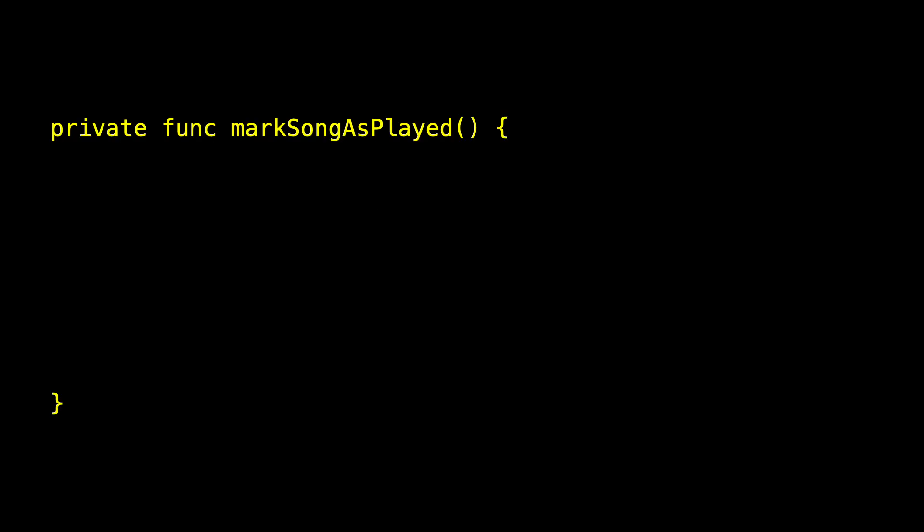Often when we're developing an app we want to track the status and see where things are. And although we know we should use breakpoints, we often first reach for print statements. As an example, in my Top Tracks Music app, when a song begins I mark it as played and I'd like to see some console output that reminds me which song is playing. So here's the mark song is played method. I first check to make sure I can extract my type, the Top Tracks song, from the song information from the application music player.